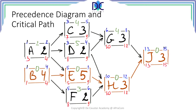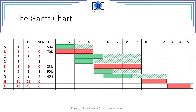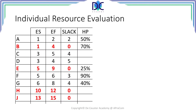This is the information we have to put in the Gantt chart, which looks like this. We see again that B, E, H, and J are on the critical path. Now we have to add the utilization of Harry Potter to this chart, but first we have to evaluate the individual commitment of Harry Potter.